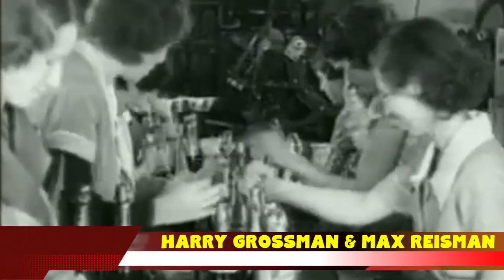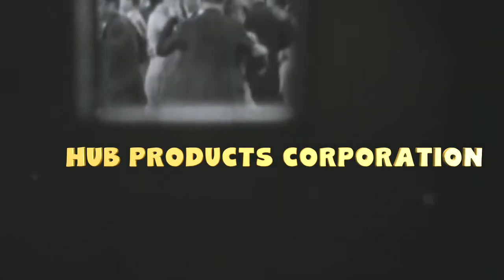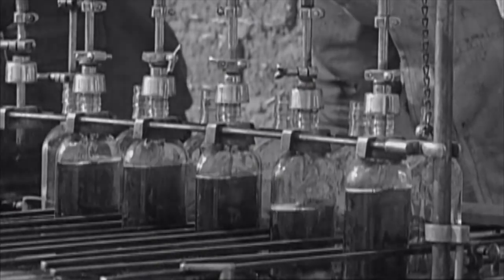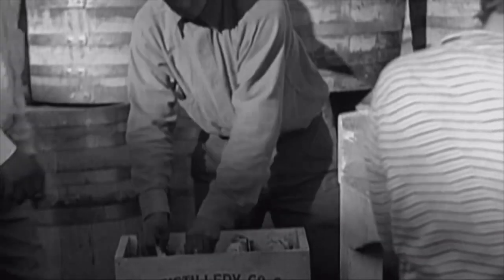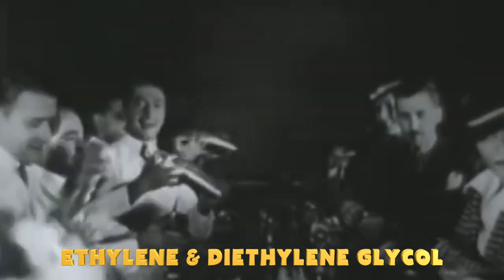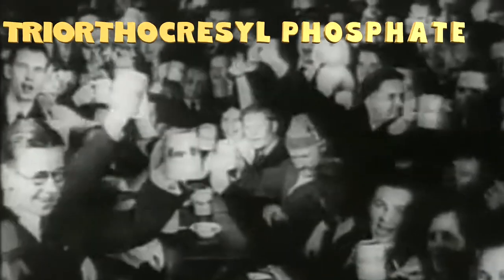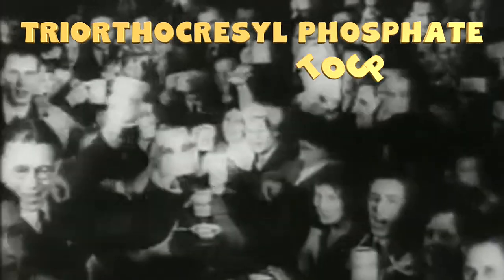And so other methods of making Jamaican ginger were sought out. Enter Harry Grossman and Max Reisman, who ran the not very legitimate Hub Products Corporation. They went searching for a different formula for Jamaican ginger. But their mistake was getting rid of the ethylene and diethylene glycol in Jamaican ginger. Trust me, it makes a difference. In favor of triorthocresyl phosphate, otherwise known as TOCP.